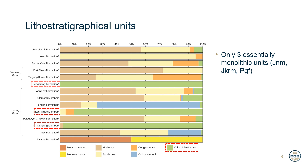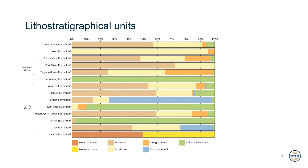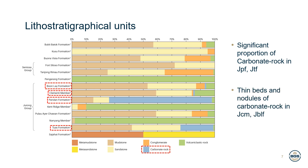Volcanoclastic rock occurs in greater amounts than previously realised, found in variable quantities in nearly all pre-Cenozoic sedimentary units — dominant in those already discussed, and subordinate in the rest of the Jurong group, Buona Vista and Bukit Batok formations, with minor amounts even in the Tanjong Rimau formation of the Sentosa group. Carbonate rock is also more widespread than previously thought — it is the dominant lithology in the Pandan formation and significant in the Tuas formation, with smaller proportions in the Bunle formation and Clementi member, usually as very thin beds or nodules.